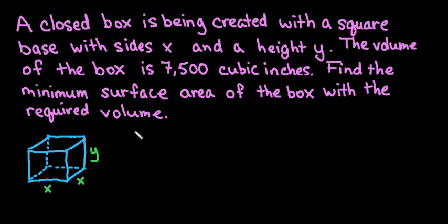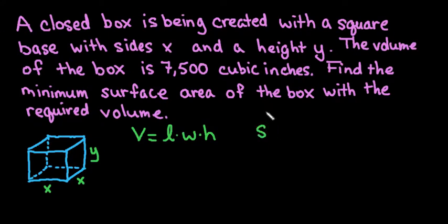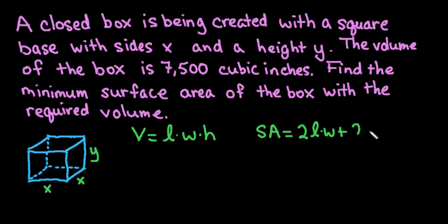First we need to know how to find the volume of a rectangular prism. Volume is always found by doing length times width times height. The surface area is equal to two times the length times width, plus two times the width times height, plus two times the length times height.